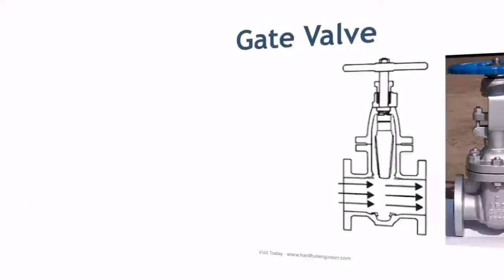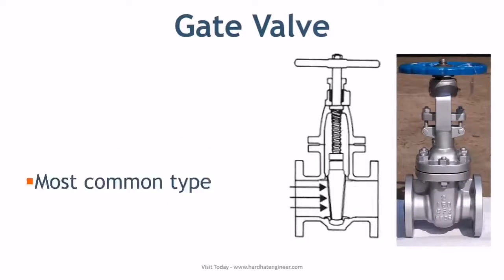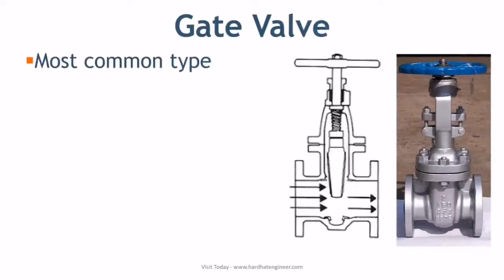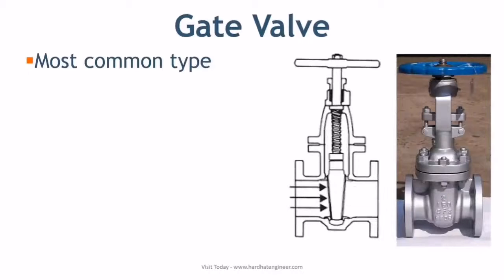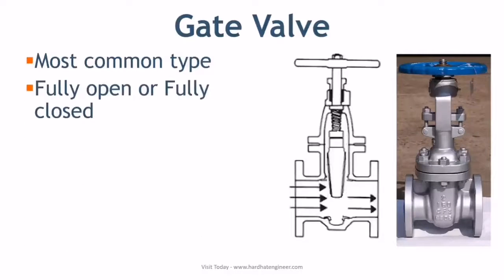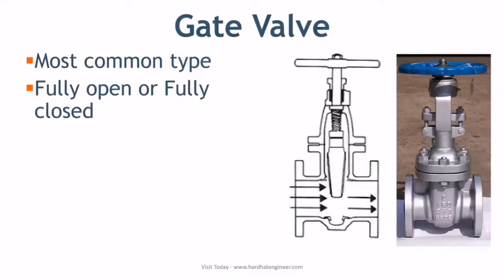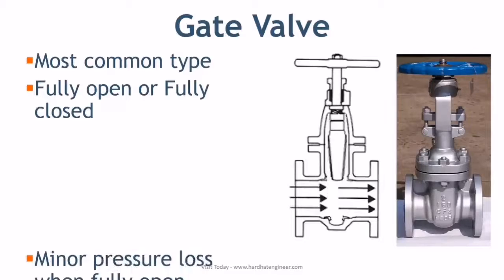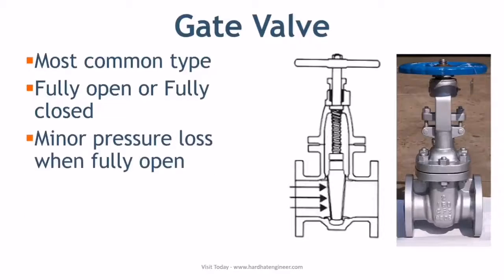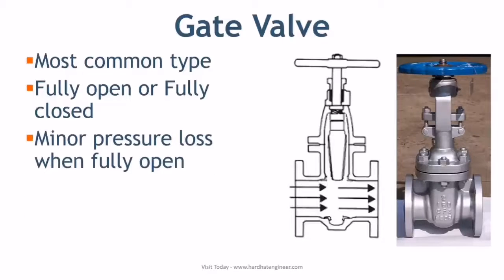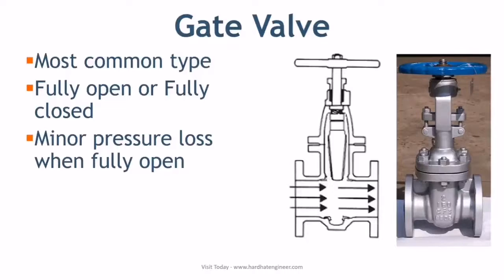Let's start with Gate Valve. Gate valve is the most common type of valve in any process plant. It is a linear motion valve used to start or stop the fluid flow. In service, these valves are either in the fully open or fully closed position.